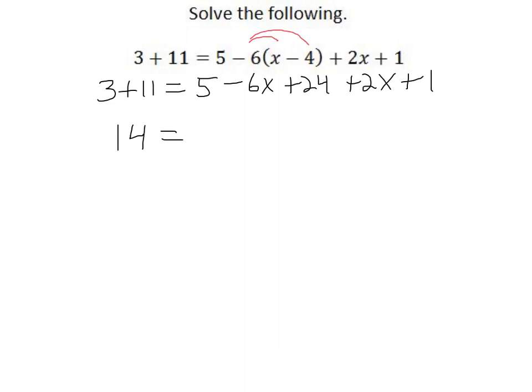Now let's take a look at the right side. First off, here's a 5. Is there another constant? Here it is, 24. And there's a third constant, a 1. So we have these three terms that are like. And adding those together, 5 plus 24 is 29. Plus 1 is 30. So we have 30.